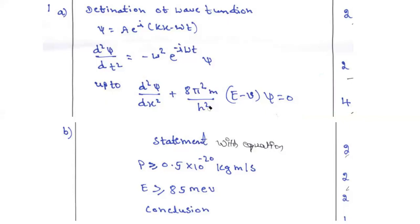Now, question number 1B, Heisenberg uncertainty principle. You can use the mathematical equation. Statement with equation carries two marks. The conditions, it is also having two plus two. Ultimately, conclusion also you have to mention. Altogether, we will be getting a total seven marks.